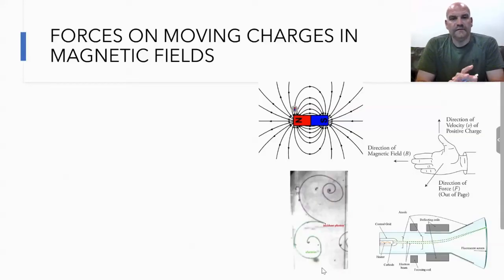All right, so welcome back to AP Physics C. This is Unit 4, the first video in this unit. Here we're going to look at what happens when moving charges move into magnetic fields and how they're affected by the magnetic field.